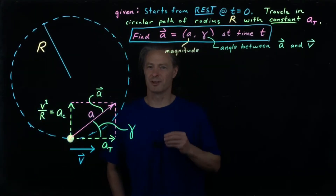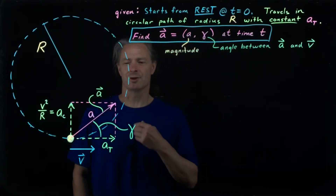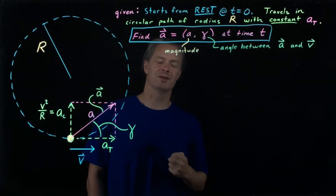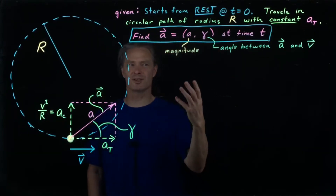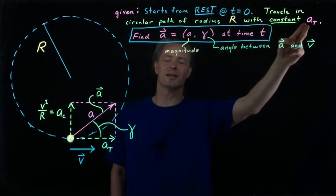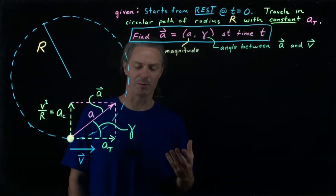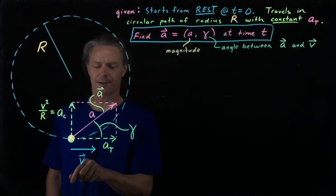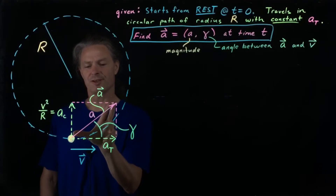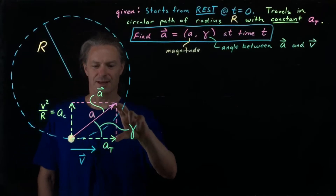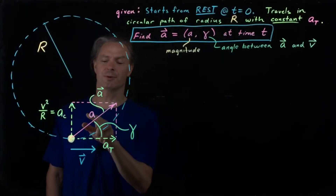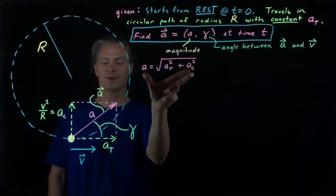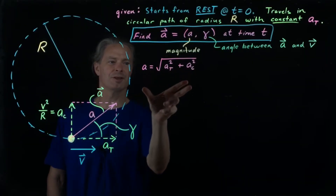Our information in this problem was given in terms of symbols, so our answer will be in terms of symbols. Our goal is to get the magnitude a and direction gamma of the acceleration vector at time t, in terms of capital R, a sub t, and the time t. Looking at our vector analysis, we see a right triangle. The magnitude of the acceleration is the hypotenuse, and a sub t and a sub c are the legs, so we can get the magnitude a from the Pythagorean theorem. We can also plug in a sub c equals v squared over R.